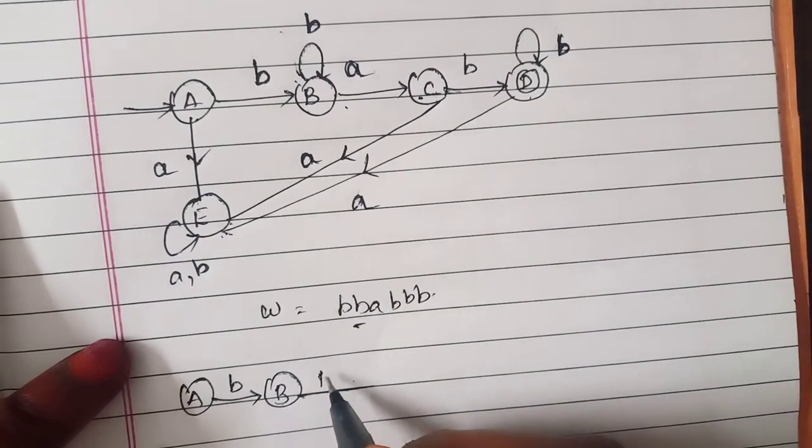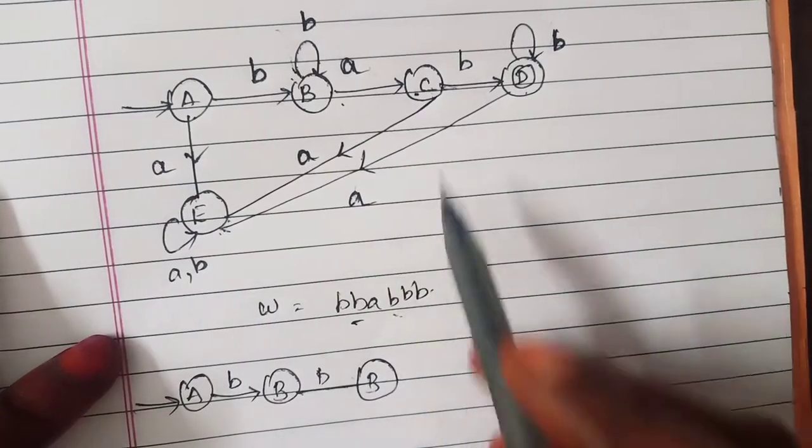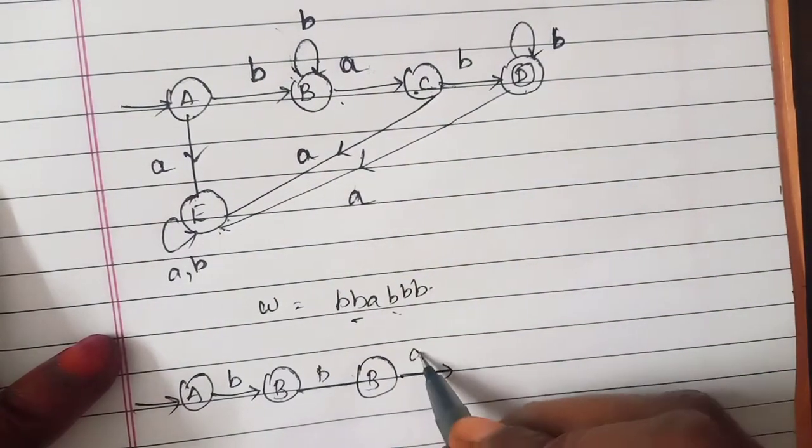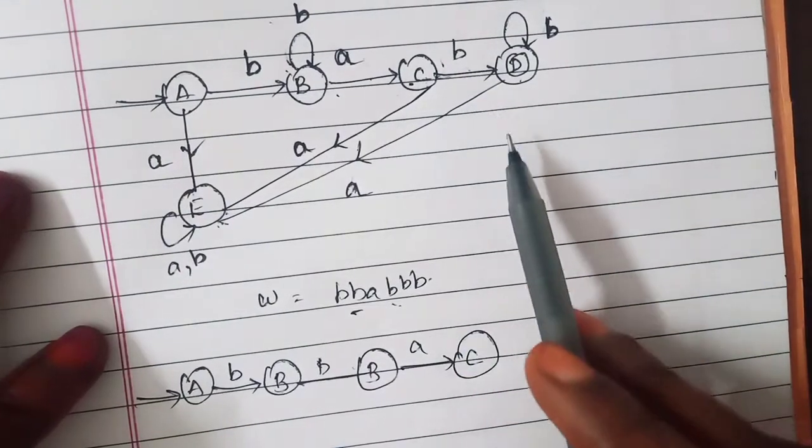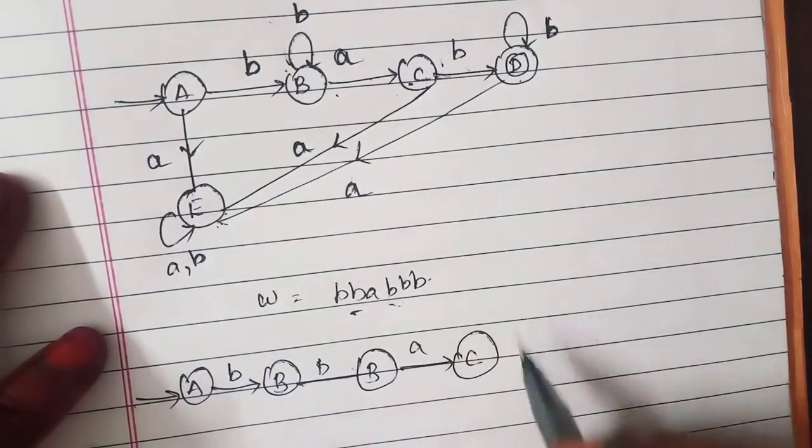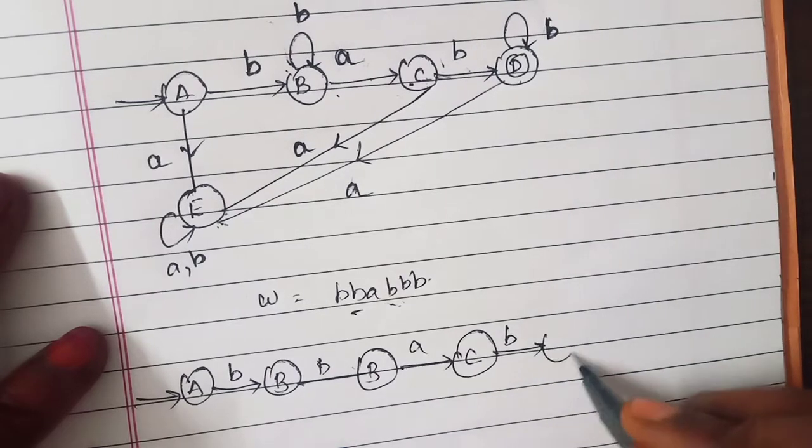After that you are having a, for a it goes to C. After that you'll have a b, so this b is over here which is D.